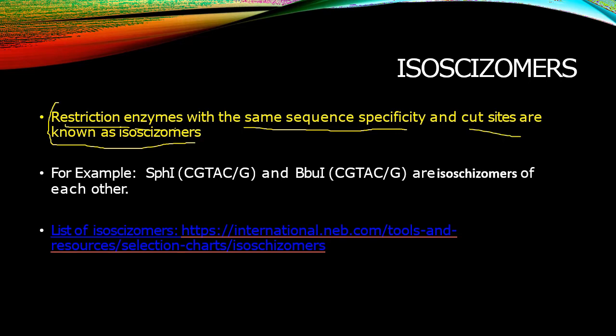For example, these two types of restriction endonuclease enzymes are isoschizomers in nature — you can see they have the same sequence specificity and cut sites. I've also provided a list of isoschizomers; you can type the URL and go to the webpage to get all of the isoschizomers, charts, and related resources.